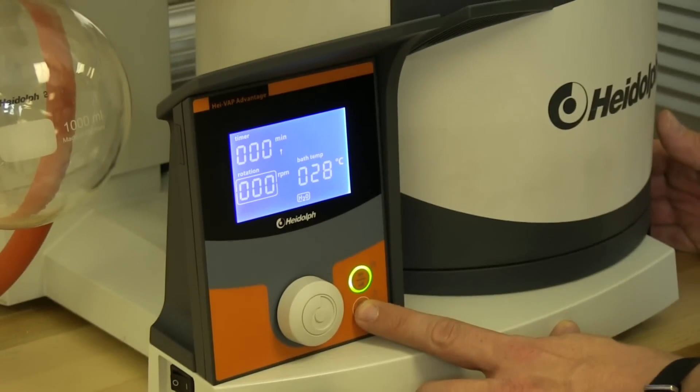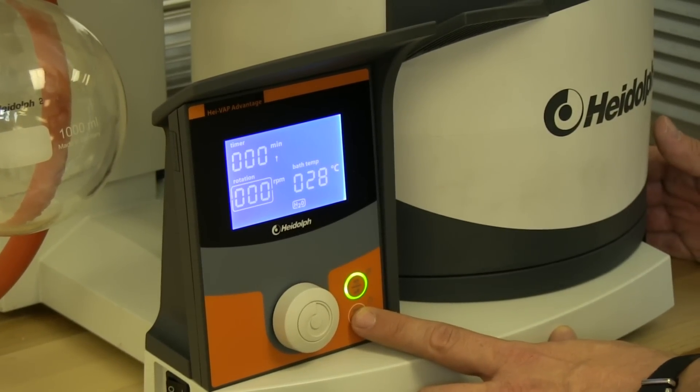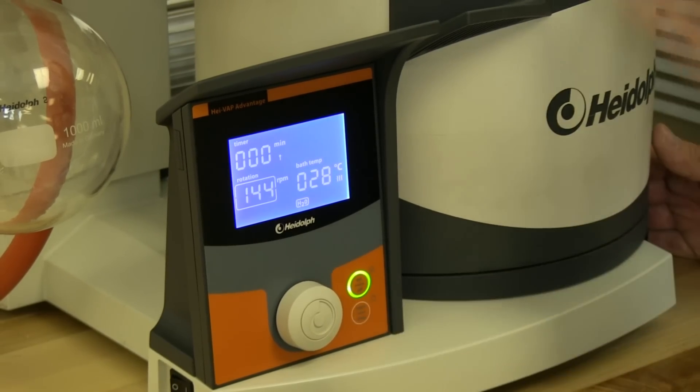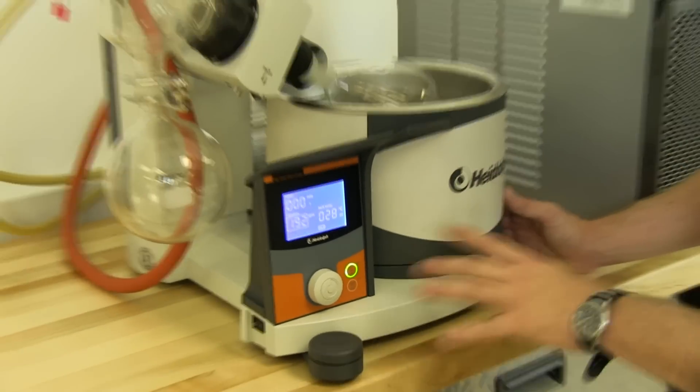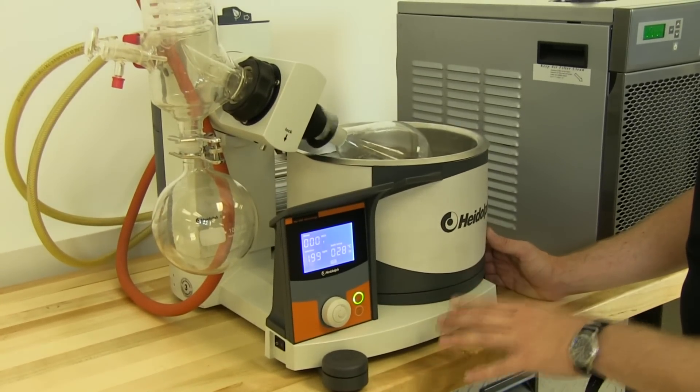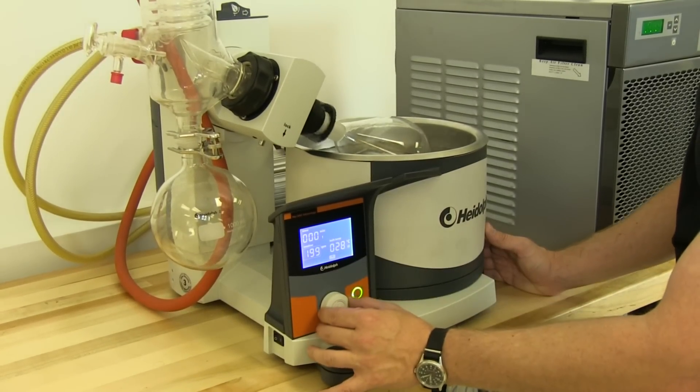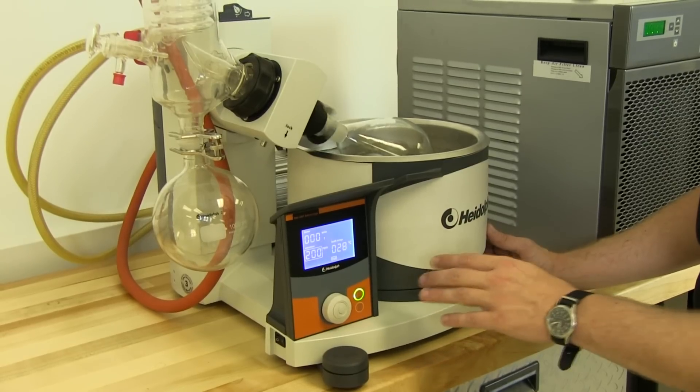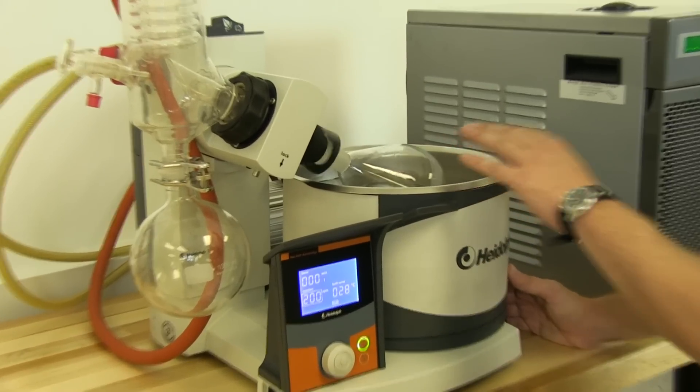We have a start-stop button for controlling the rotation. Now, this is a completely empty system right now. We are not pulling vacuum on it or anything, but we have it set to 200 RPMs. You can go faster if you want. You can go slower depending on what you have and the viscosity.